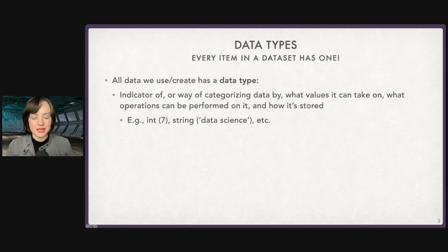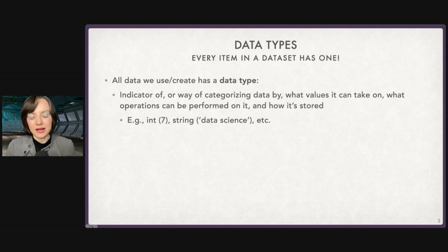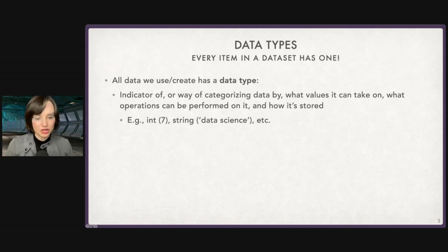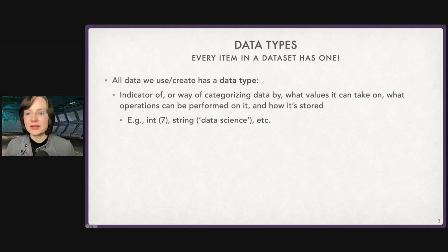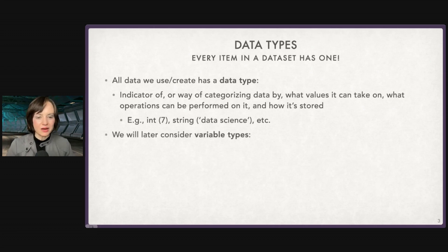For example, one data type is an int — that's a number, and that could be a seven. Another data type is a string, and the phrase 'data science' in quotes is a string. If you've seen int, string, float before, that's the world we're living in right now.